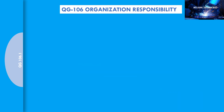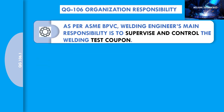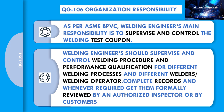As per the ASME BPVC Section 9 QG 106 organization responsibility, the welding engineer's main responsibility is to supervise and control the welding test coupon. Welding engineers should supervise and control welding procedure and performance qualification for different welding processes and different welding operators, complete records, and whenever required, get them formally reviewed by an authorized inspector or by the customer.